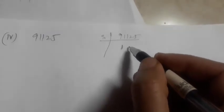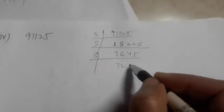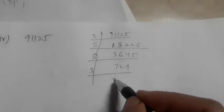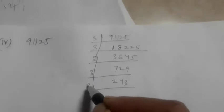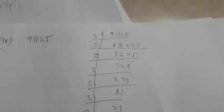The 4th part is 91125. We will find the prime factorization of this number. It will go by 5: 18225. Then by 5 again: 3645. Then by 5 again: 729. It will go by 3: 243. Then by 3: 81. Then by 3: 27. Then by 3: 9. Then by 3: 3. Then by 3: 1.